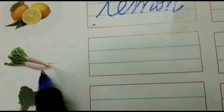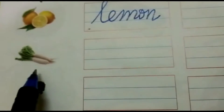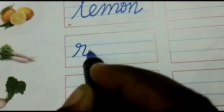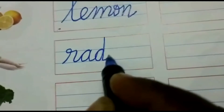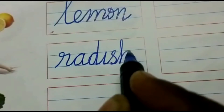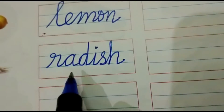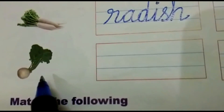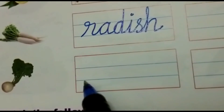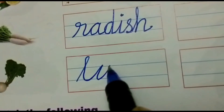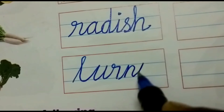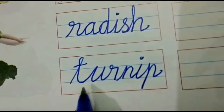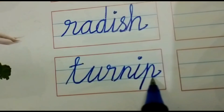The next one — see there, what is this? Radish. What spelling for radish? R-A-D-I-S-H. Radish. The last one, turnip. What spelling for turnip? T-U-R-N-I-P. Turnip.